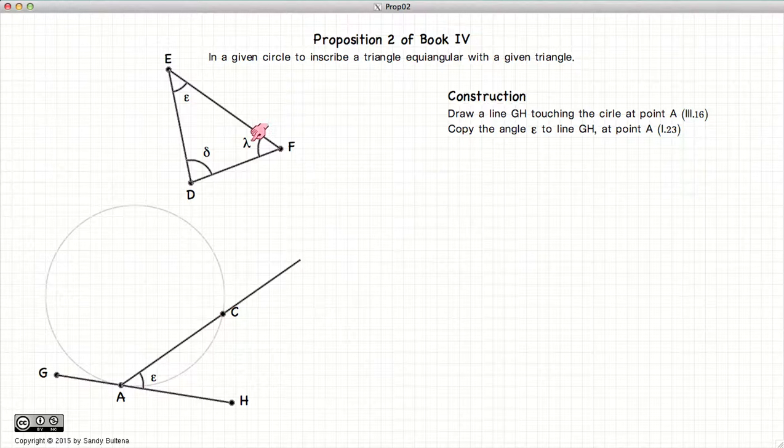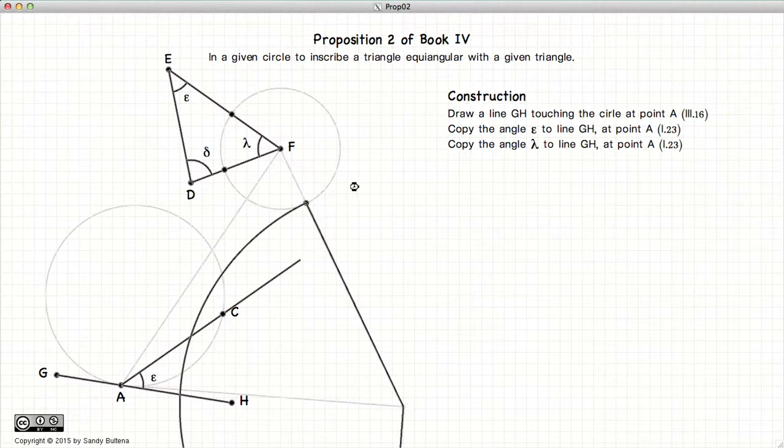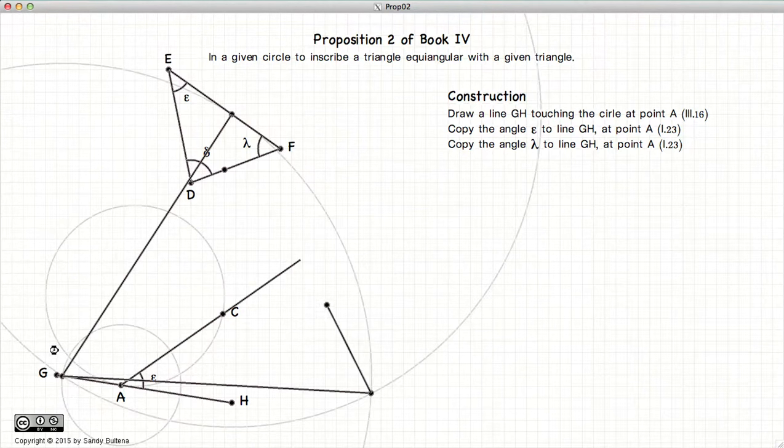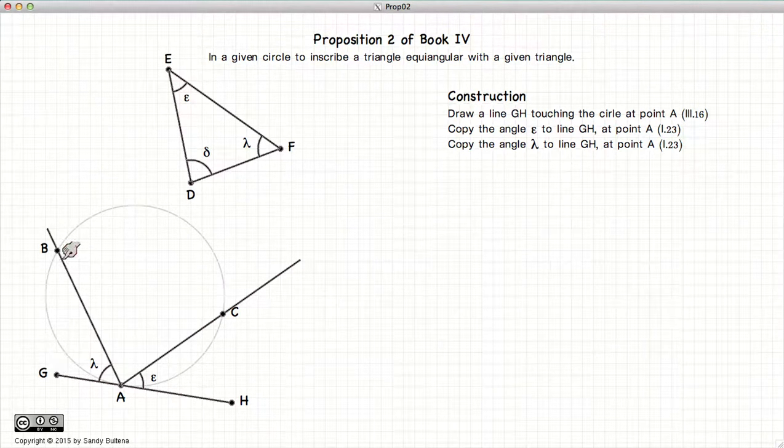Now we are going to do the same thing with the angle lambda, only this time we will make an angle towards the point G. So BAG is equal to lambda.